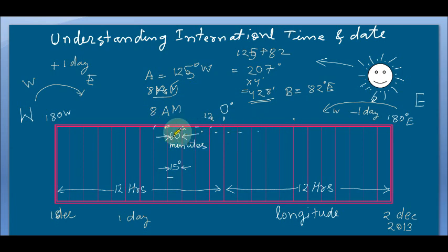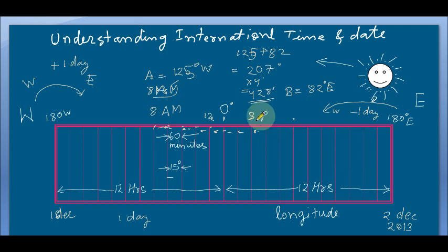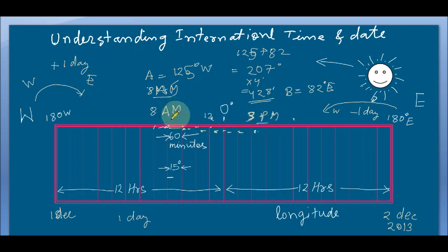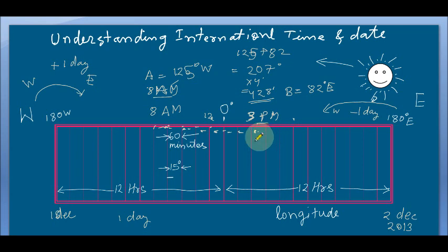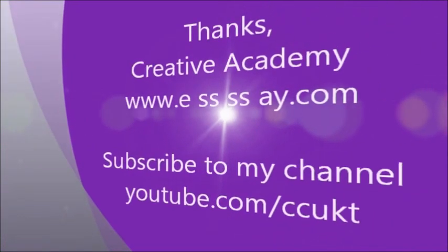Starting from 8 AM and counting 7 hours forward: 8, 9, 10, 11, 12 noon — after noon it becomes PM — 1 PM, 2 PM, 3 PM. So the time at point B is 3 PM. This is because the Sun has already passed that place. In the next video, I will solve two or three more geography problems to clarify how to calculate time. Watch the next video!